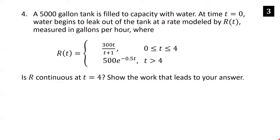A 5,000-gallon tank is filled at t = 0. Water leaks at rate r(t) = 300t/(t+1) for 0 ≤ t ≤ 4, and r(t) = 500e^(−0.5t) for t > 4. Is r continuous at t = 4? This is essentially a continuity problem. We need to check the limit as t→4 and the function value there. Since the function is piecewise and breaks at t = 4, we compute left and right-hand limits separately.